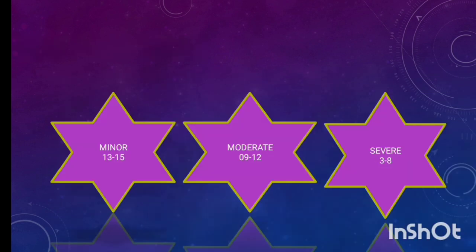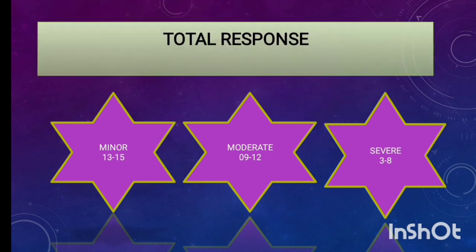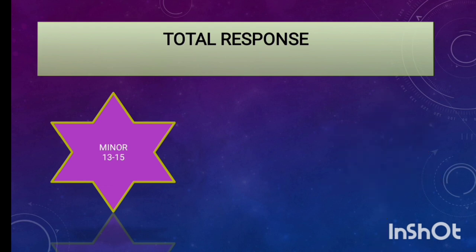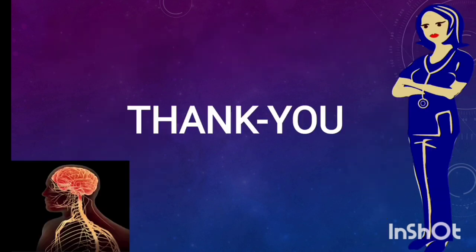Then the last one we'll see, if the patient gets the score between 3 to 8, it means the patient condition is severe. If the score is between 9 to 12, it means moderate condition. The last one is minor, that is the patient will have 13 to 15 score.